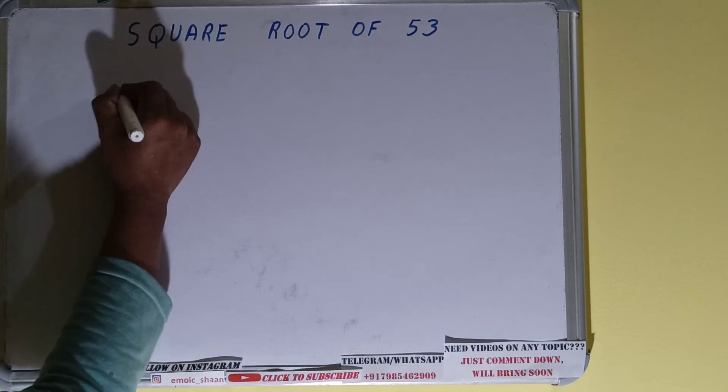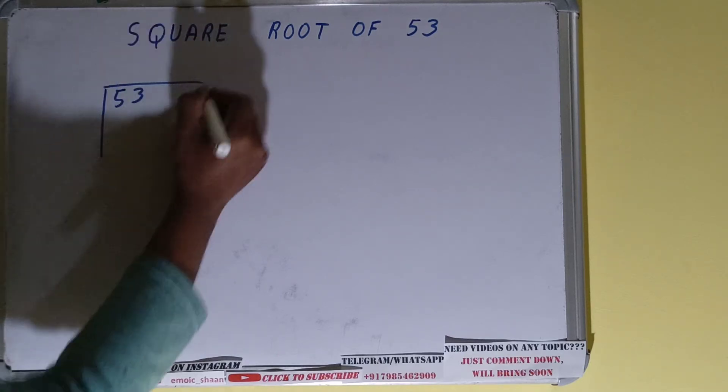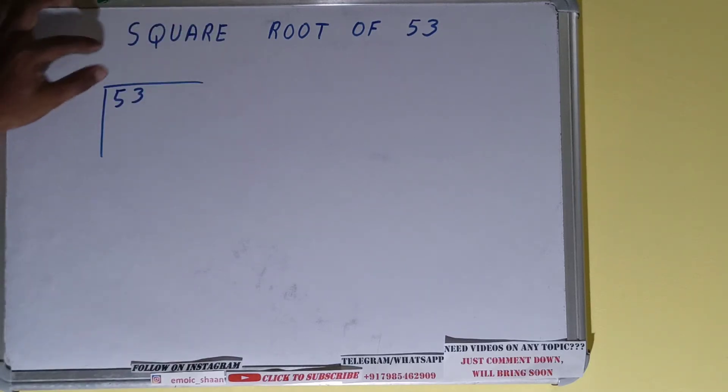So first we need to write the number like this, and the rule is whatever divisor we take here, the same as quotient also we need to take.